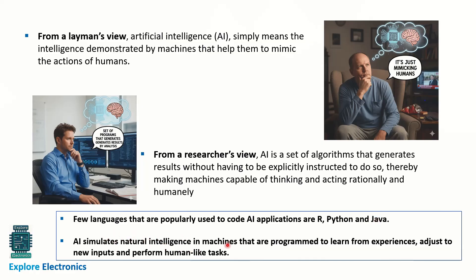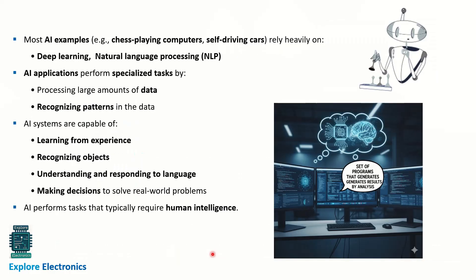Some languages popularly used for AI are R, Python, and Java. AI simulates natural intelligence in machines programmed by learning from experiences, adjusting to new inputs, and performing human-like tasks. Examples of AI include chess-playing computers — where one end is played by a human and the other by a computer — and the concept of self-driving cars, which use deep learning and natural language processing.